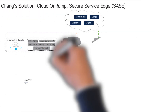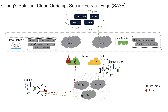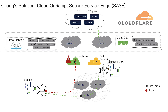Let's now see how Cloud OnRamp Secure Service Edge helps Chang. The Cloud OnRamp for SaaS integration with Secure Service Edge, or SASE, enables continuous probing for SaaS applications through SASE tunnels. This helps in choosing the best-performing SASE tunnels to deliver optimal performance for SaaS applications. For a unified Secure Access Service Edge architecture, Cisco SD-WAN and Cisco Umbrella will meet your needs. However, for a multi-vendor strategy for the SASE deployment, Cisco has expanded its SASE ecosystem by collaborating with third-party secure service edge vendors such as Zscaler, Cloudflare, and Netskope.